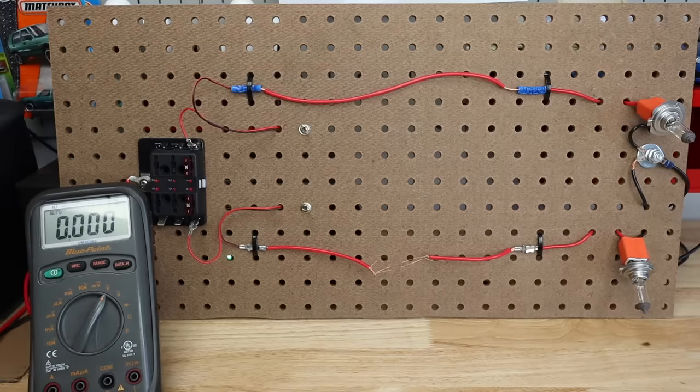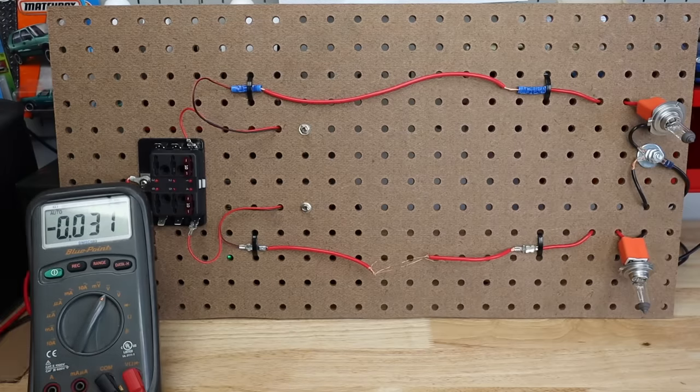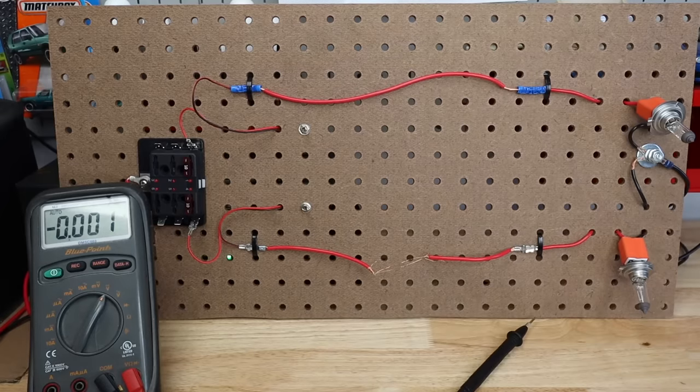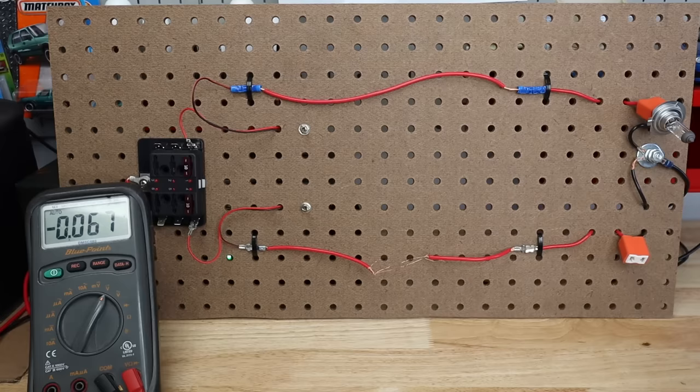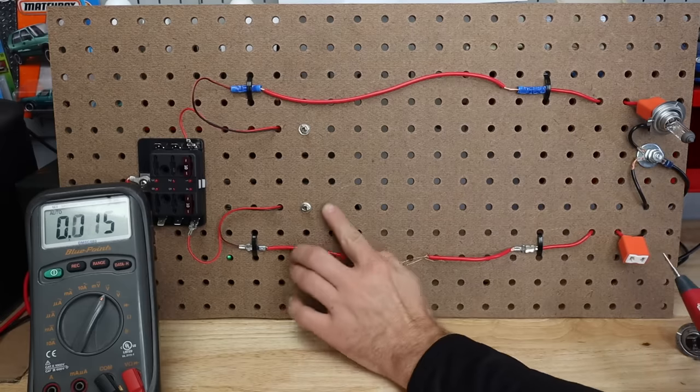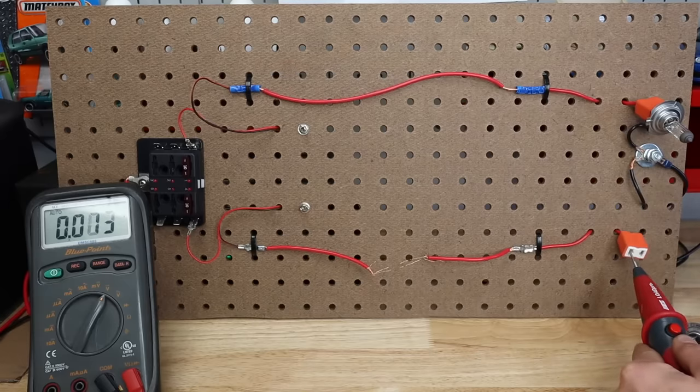So we'll disconnect our leads from our multimeter, plug in our load pro. We're still checking DC voltage so we're going to leave it there. We'll come on this side, disconnect the bulb, and here we're going to check the entire circuit.